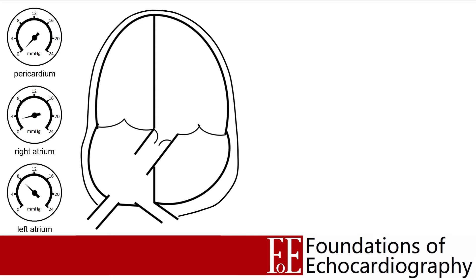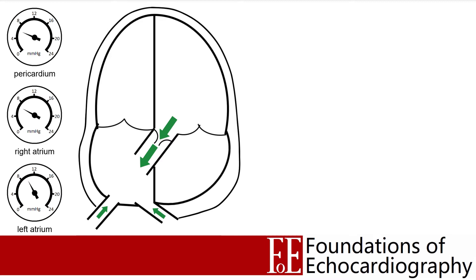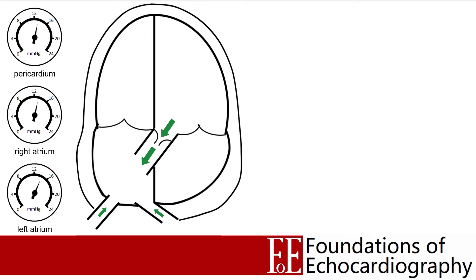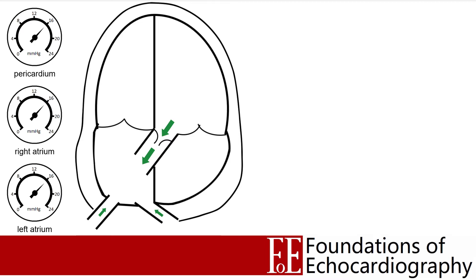As the effusion grows and pressure rises, some of this pressure is transmitted into the heart cavities, raising atrial and ventricular diastolic pressures. In healthy individuals the right atrium has the lowest mean pressure, followed by the left atrium. As an effusion develops, pericardial pressure first equals and then exceeds right atrial pressure, then left atrial pressure. Using Guyton's model, if pericardial pressure raises right atrial pressure, venous return decreases — reducing preload and cardiac output.